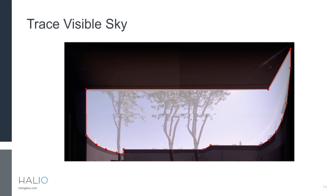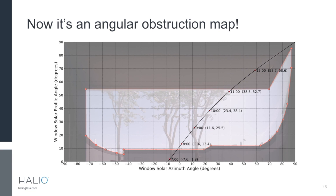Once we've traced the visible sky, we essentially have an obstruction map that we can query in real time with our control system to know when a window is in shade or not. This shows the sun path through a year, and we can query it at hours, every minute, or every 30 seconds.